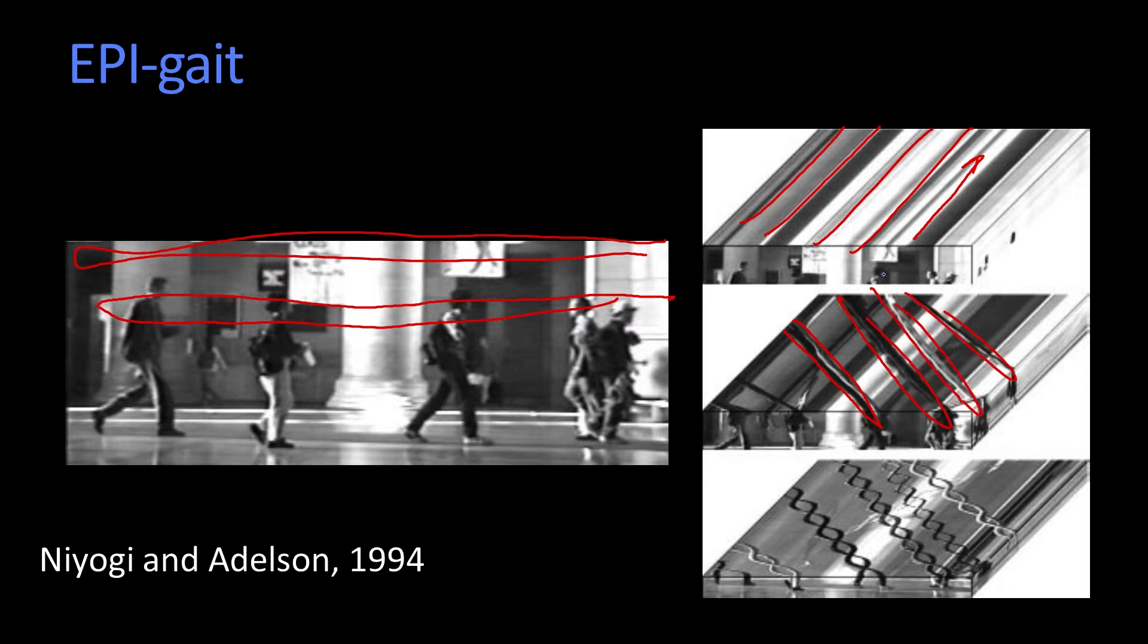That's the movement of their heads through space-time. That's what this volume is, it's space-time. And so each one of these diagonal lines is the movement of their heads. And these straight lines here, what are those? Those are just the background, just like up here.